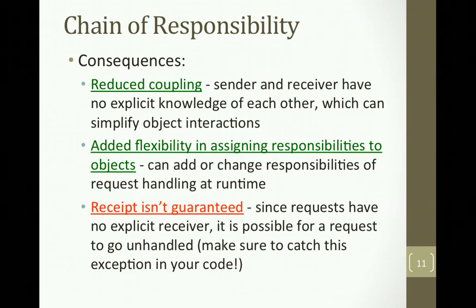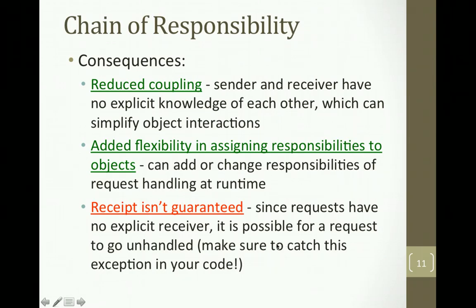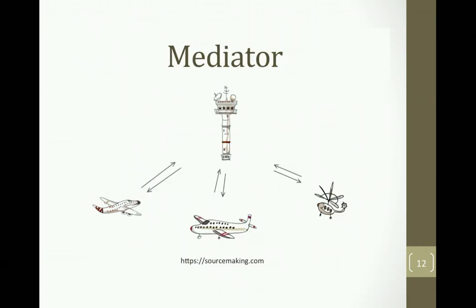A negative consequence is that receipt isn't guaranteed. The sender doesn't know anything about the receiver, so once it sends off the request, it doesn't actually know if the request finished or finished successfully. If you reach the end of the chain and can't handle the request, that's it — you're out of luck. It's important to make sure your code throws exceptions and follows good coding practices so those kinds of scenarios don't go unnoticed. That's it for Chain of Responsibility.